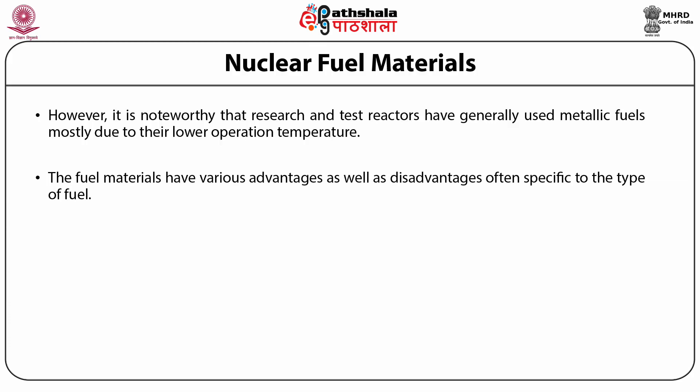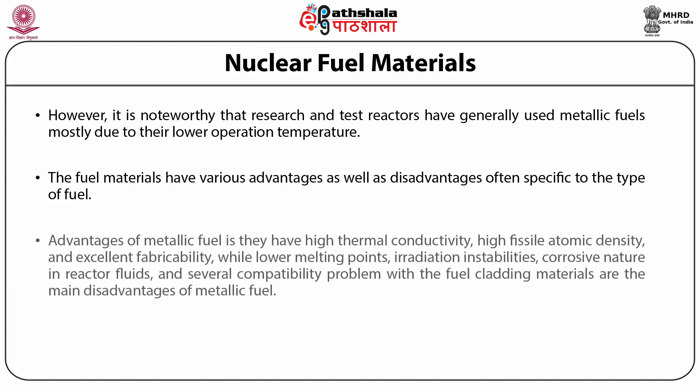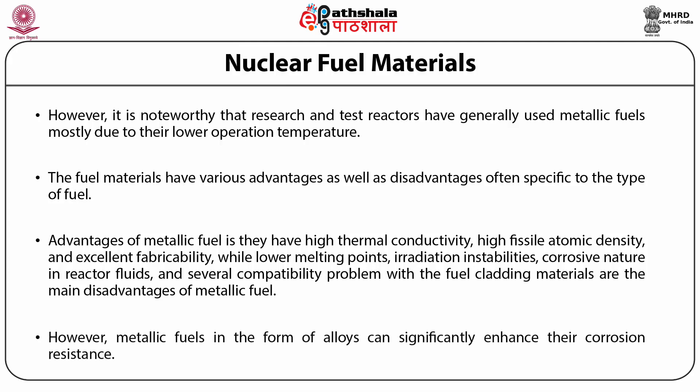Research and test reactors have generally used metallic fuels, mostly due to their low operation temperature. The three major metallic nuclear fuel materials are uranium, plutonium and thorium. Advantages of metallic fuel include high thermal conductivity, high fissile atomic density and excellent fabricability, while lower melting points, irradiation instabilities, corrosive nature in reactor fluids and compatibility problems with cladding materials are the main disadvantages. However, metallic fuels in the form of alloys can significantly enhance their corrosion resistance.